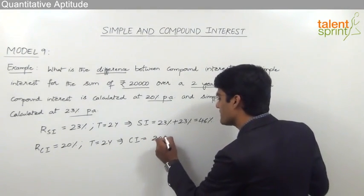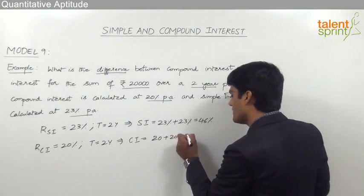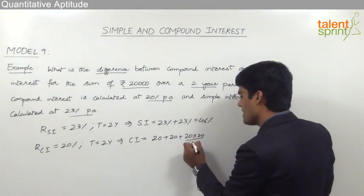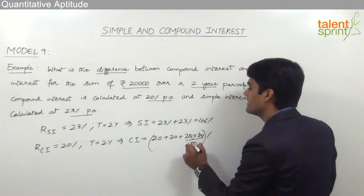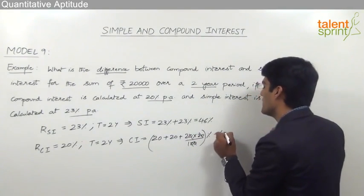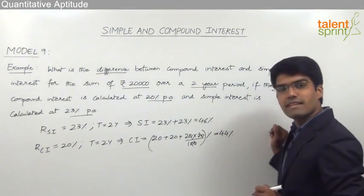So it will be equal to 20 plus 20 plus 20 into 20 by 100 in terms of percentage. So 20 plus 20 is 40 and this is equal to 4. 40 plus 4 is 44%. So as you can see here,